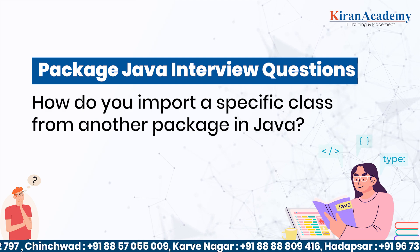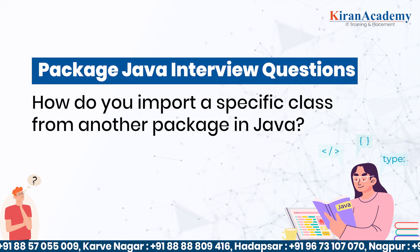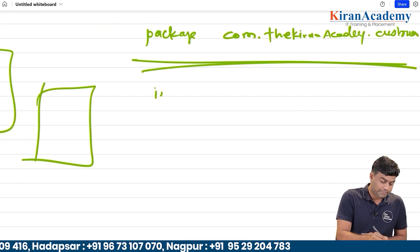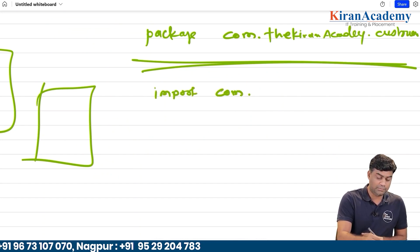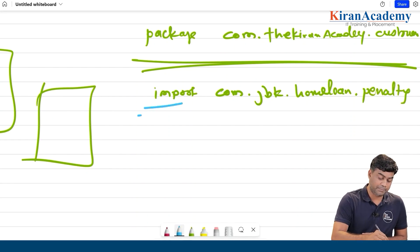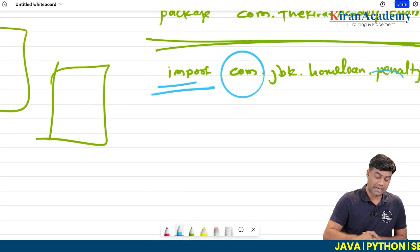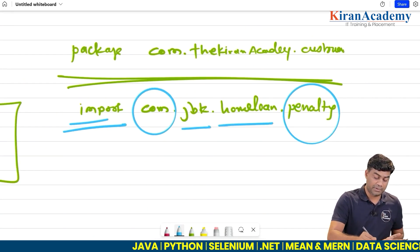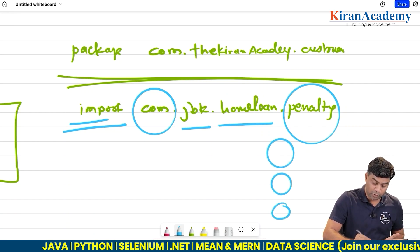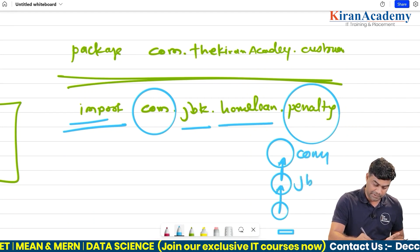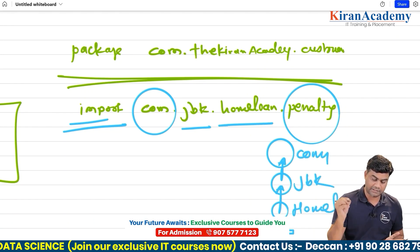Next question: How do you import a specific class from another package in Java? It's very simple — we need to use the import statement, which should include the file name. For example: import com.jbk.homeloan.Penalty. This is the import statement. Here 'com' is the root folder, 'jbk' is a sub-folder of com, 'homeloan' is a sub-folder of jbk, and 'Penalty' is the file. The folder structure is com → jbk → homeloan → Penalty file.